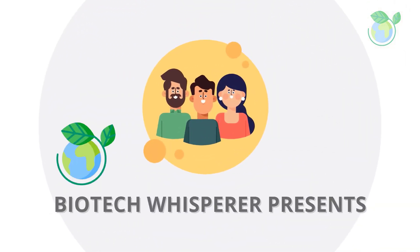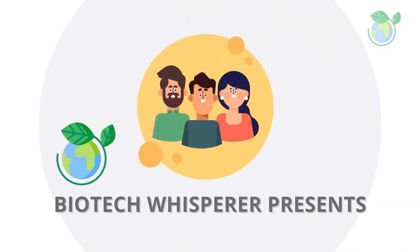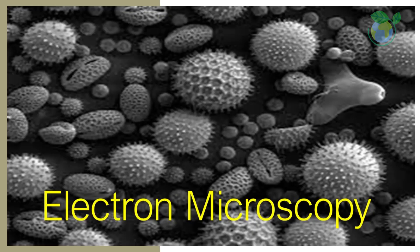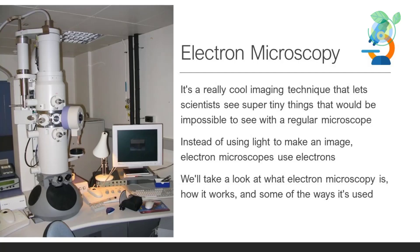Good morning YouTube! Have you ever heard of electron microscopy? It's a really cool imaging technique that lets scientists see super tiny things that would be impossible to see with a regular microscope. Instead of using light to make an image, electron microscopes use electrons. This means that they can see things at the atomic and molecular level, which is pretty amazing. In this video, we'll take a look at what electron microscopy is, how it works, and some of the ways it's used. Get ready for a journey into the teeny tiny world of electron microscopy.